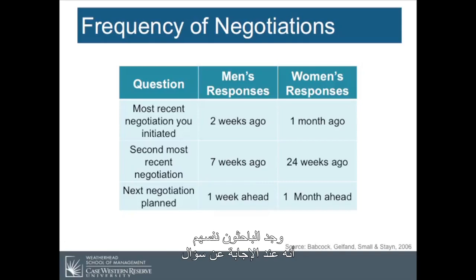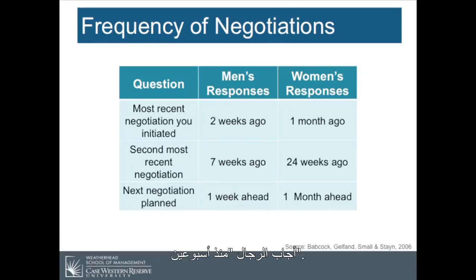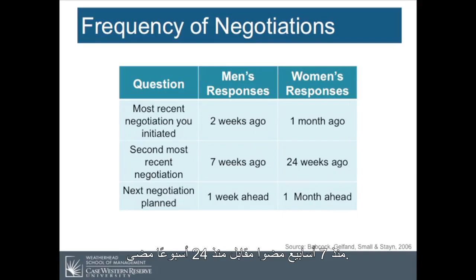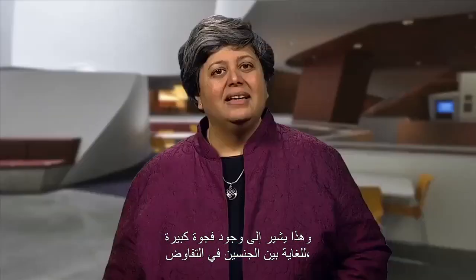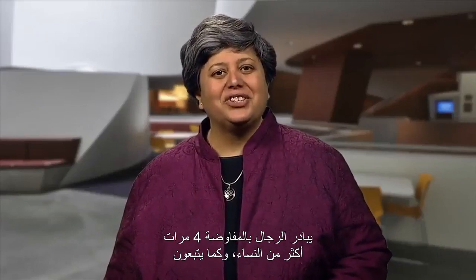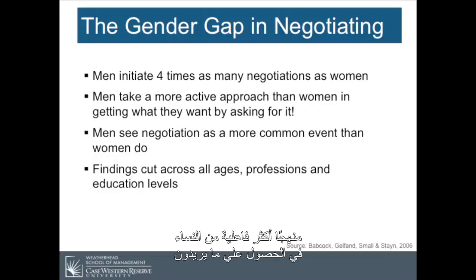The frequency of negotiations differs greatly among men and women. When asked, 'When was your most recent negotiation that you initiated?' men responded two weeks ago, women responded one month ago. When was the second most recent negotiation? Seven weeks ago versus 24 weeks ago. When is the next negotiation planned? One week ahead for men, one month ahead for women. This indicates a very large gender gap in negotiating: men initiate four times as many negotiations as women, men take a more active approach in getting what they want by asking for it, and men see negotiation as a more common event than women do.